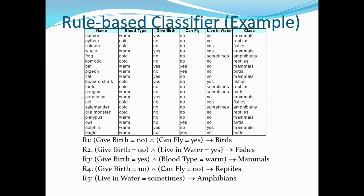Taking a database example with attributes: name, blood type, give birth, can fly, live in water, and class. The learned model contains different rules — there are five rules, R1 to R5.